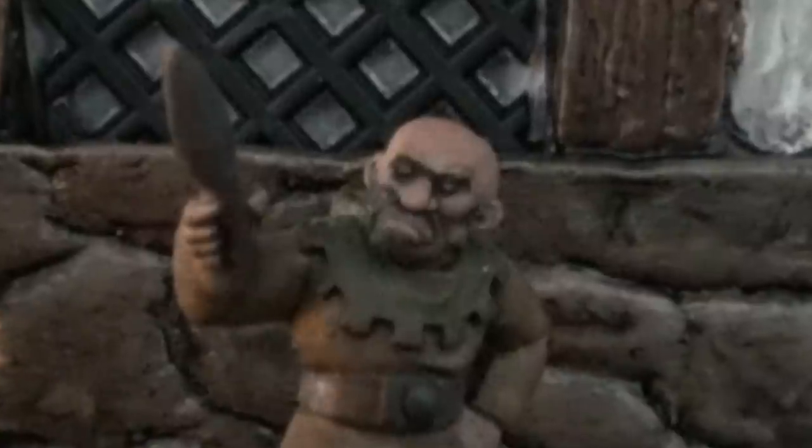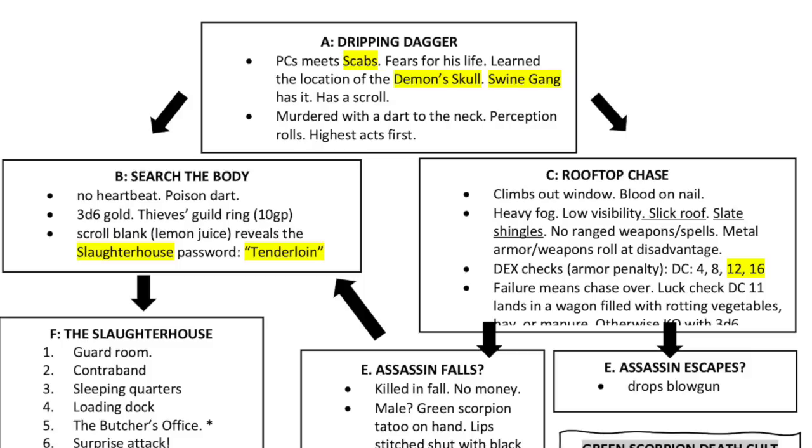The Demon's Skull has been stolen by a notorious street gang called the Swine Gang. Scabs reaches into his cloak, pulls out a scroll tube, holds it out to the characters and says, 'Look, if anything happens to me...' — and zip, he's hit with a poison dart and falls dead on the spot. The tavern is filled with dangerous-looking people, any of whom could have committed the murder. Call for a perception check. The player with the highest roll perceives one particular cloaked figure moving out the exit door toward the back. Players have a choice: pursue the assassin out the back, or search the body.